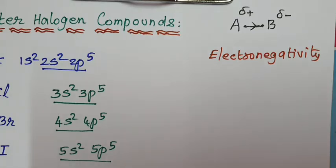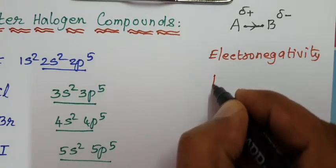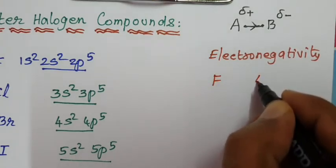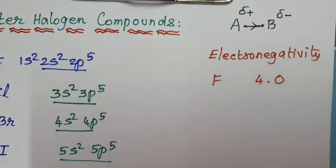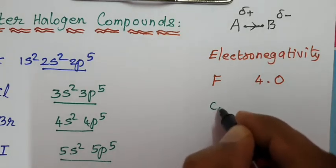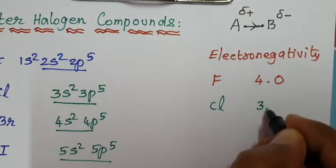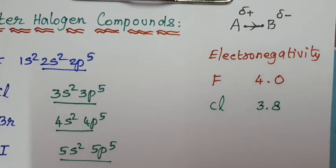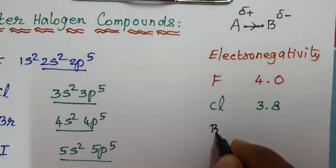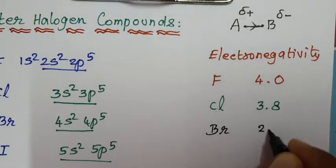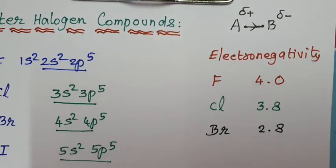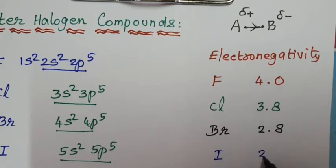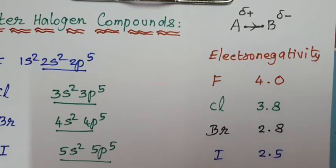Fluorine is the most electronegative element in the periodic table; its value is 4.0. Chlorine has an electronegativity value of approximately 3.8 (actually 3.87). Bromine's electronegativity value is 2.8, and iodine's is 2.5. These are the electronegativity values of halogens.